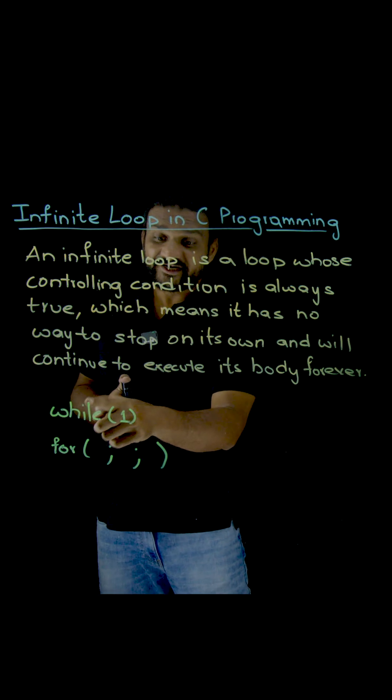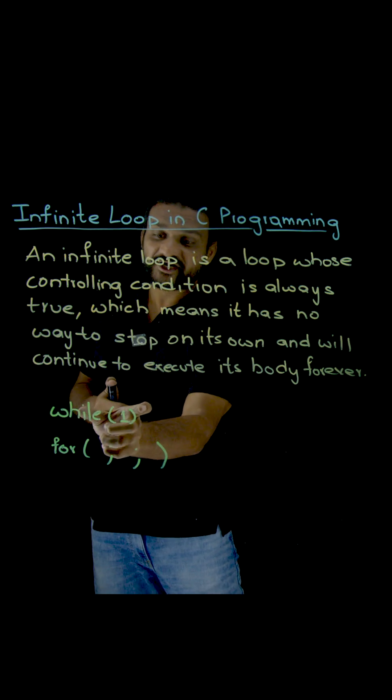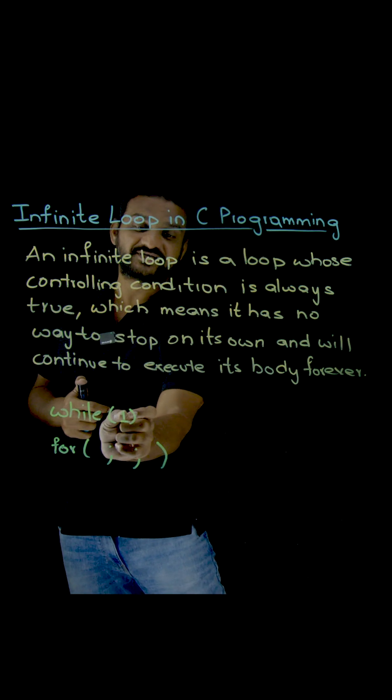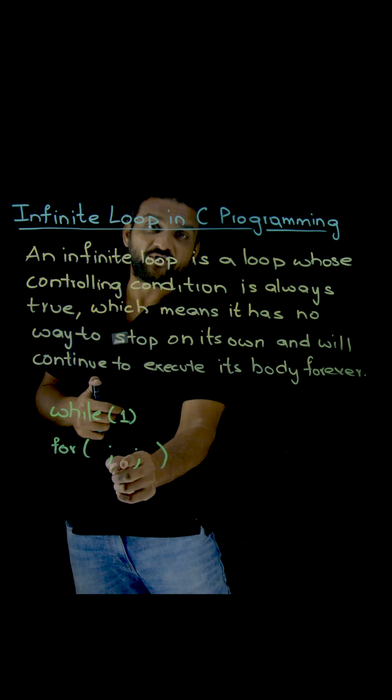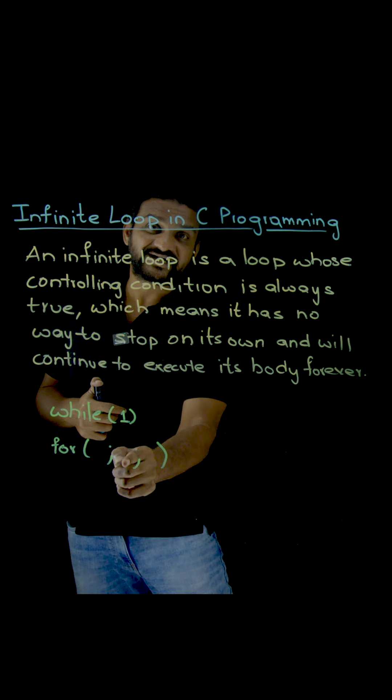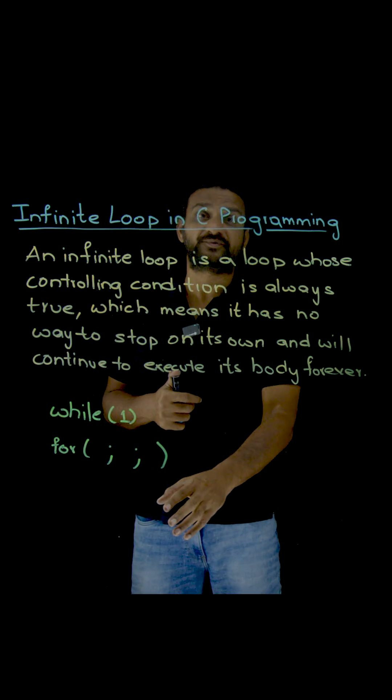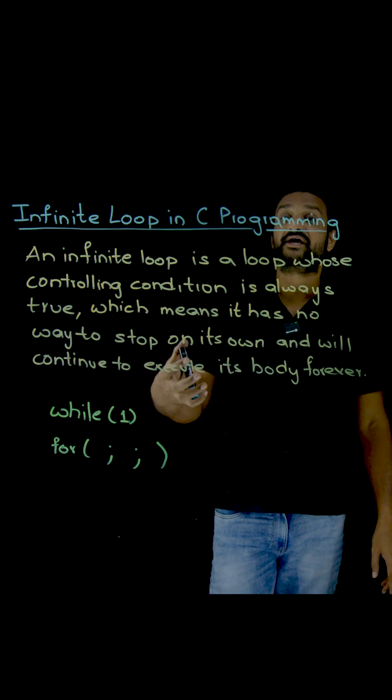So now we can intentionally create infinite loops using a while loop by giving this conditional statement as 1. And by using a for loop, if we avoid the conditional statement within the for loop, then the for loop will become an infinite loop.